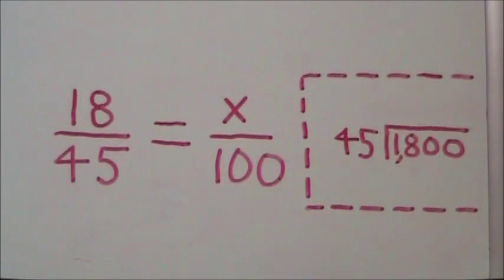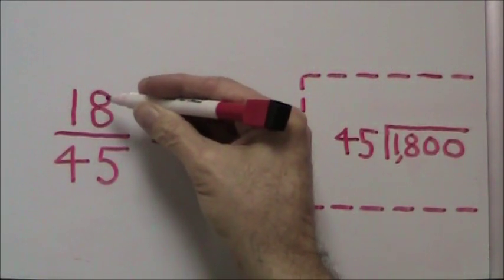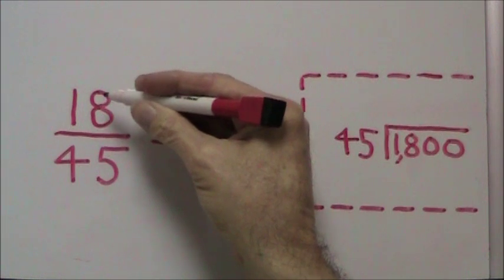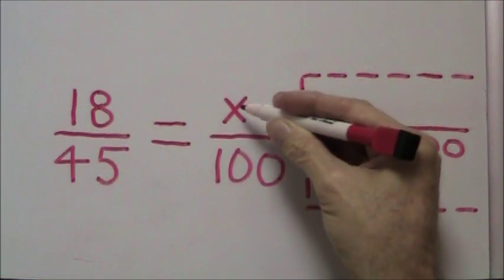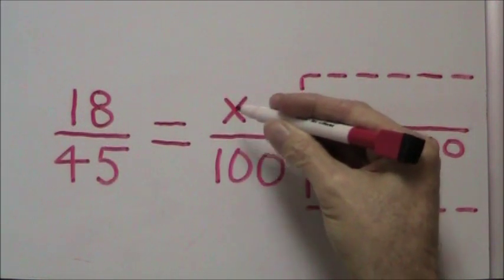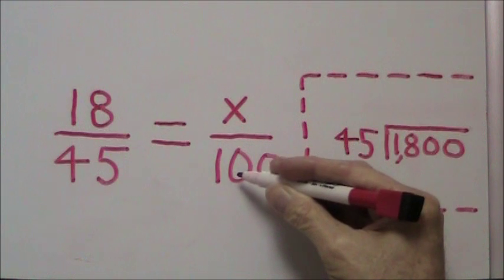Our proportion will look like this. 18 will be our numerator of our first fraction. This will be over a denominator of 45. X is the percent we're looking for, and this will be over our denominator of 100.